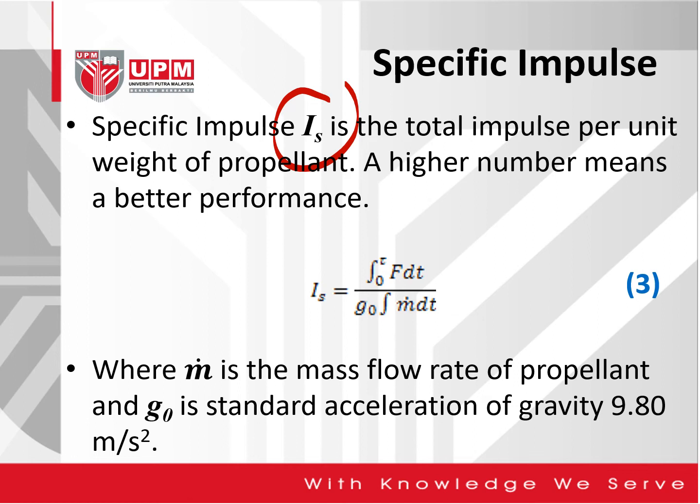Where M-dot is the mass flow of propellant and G-naught is the standard acceleration of gravity, which is 9.80 meters per second squared.